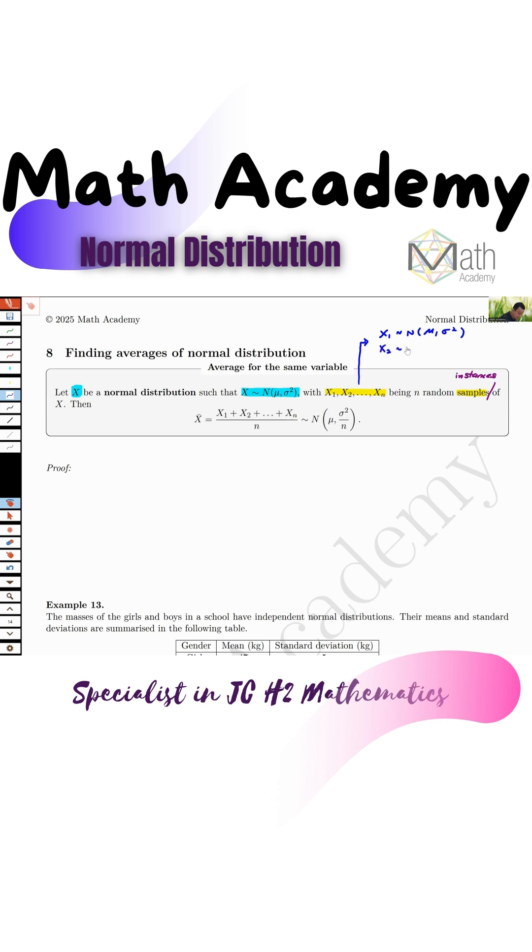So x2 also the same, still mu sigma square. So you can think of it like different objects all from x.